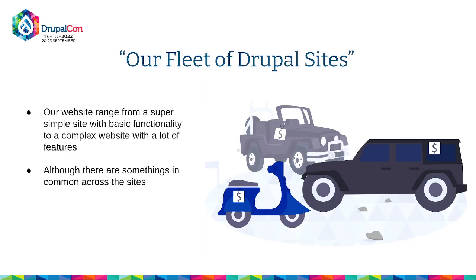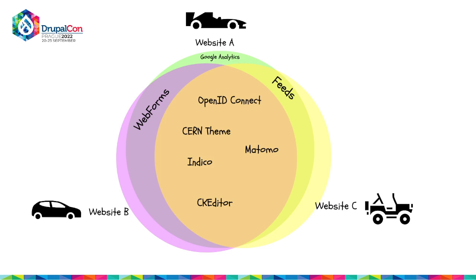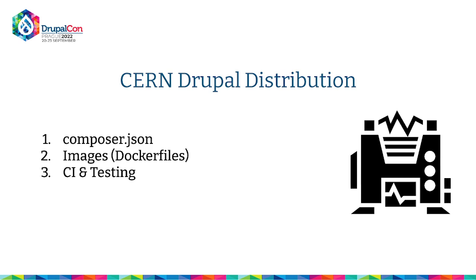Talking about a fleet of Drupal sites — we have 1,000 sites with a mix from simplest to most complex. Each website is like a vehicle with its own features, modules, and themes, but there's something common among all of them. We try to identify the common elements and call it the CERN Drupal distribution. Like an engine common among all cars, we bring together common libraries and modules and package it into our own distribution on top of the official Drupal version.